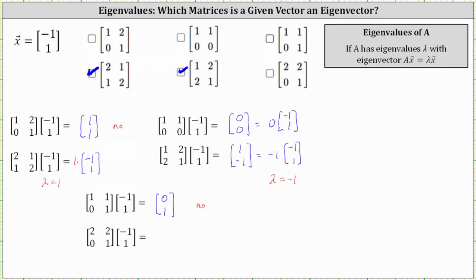And for the last product, the first entry is 2 times negative 1 plus 2 times 1, which is 0. And the second entry is 0 times negative 1 plus 1 times 1, which is 1. Just as above, the vector (0, 1) is not a scalar multiple of the vector (-1, 1), and therefore the vector (-1, 1) is not an eigenvector for the given matrix.